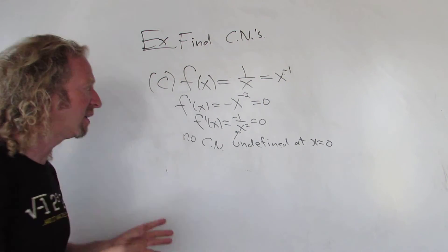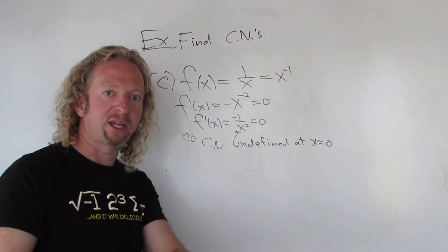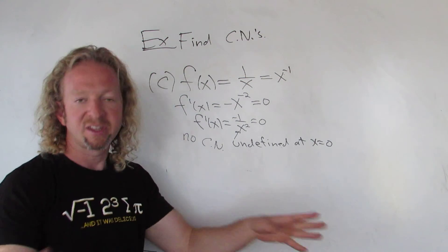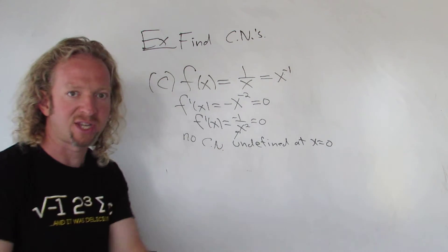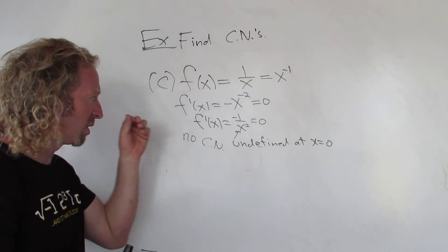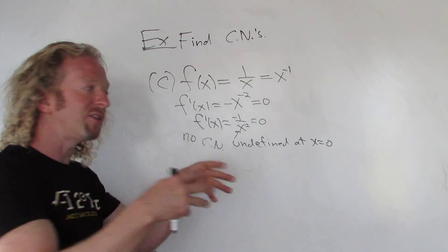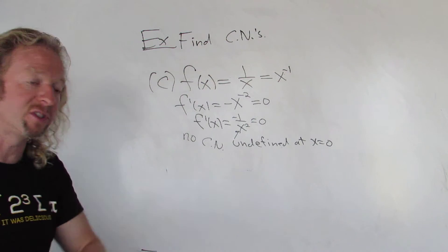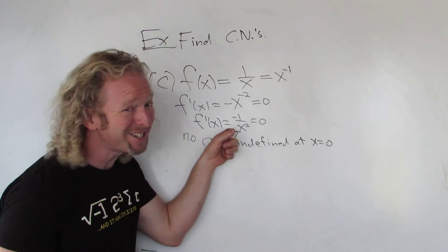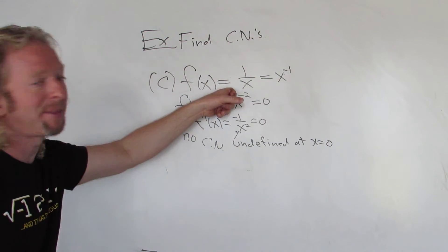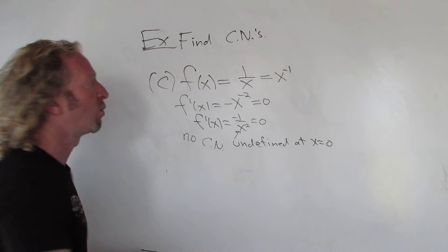You have to be really careful. When looking for critical numbers: take the derivative, check where it's undefined and set it equal to zero to find those values. Then ask yourself — are those numbers in the domain of the original function? If they are, they're critical numbers. If they're not, they don't count. Here, the derivative is never zero and is undefined at zero, but zero is not in the domain, so no critical numbers.